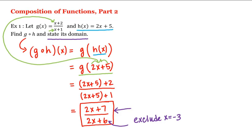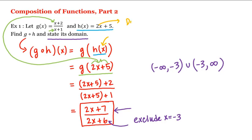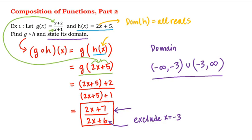The domain of this final form is the interval from negative infinity up to negative 3, open parenthesis because we do not include negative 3, union open parenthesis at negative 3 up to infinity. However, when finding the domain of a composition, we also need x to be in the domain of the inside function h. But the domain of h is all reals, so all of these values are fine. This is the domain of g composed with h.